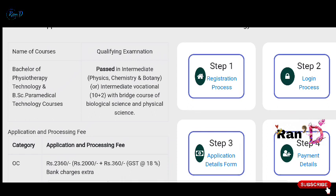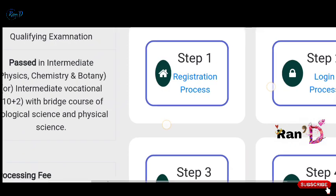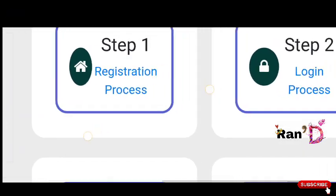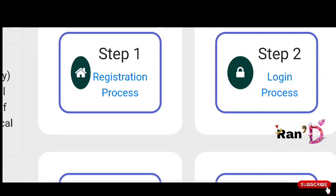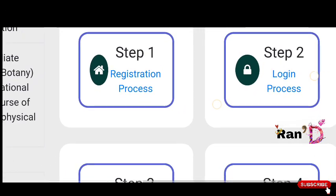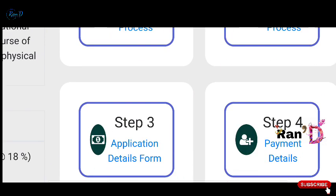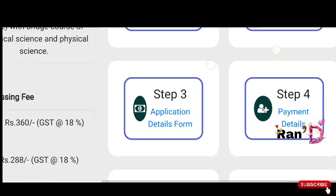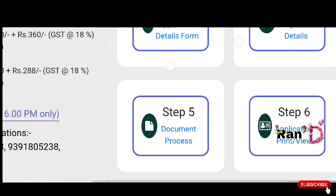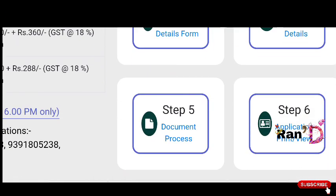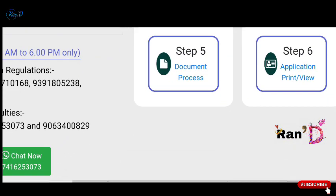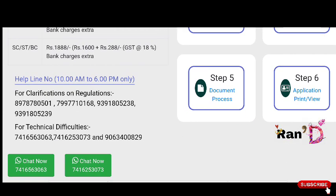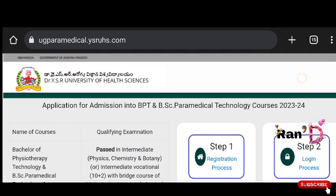So let me show you a clear cut step-by-step process: Step 1 — Registration process. Step 2 — Login process. Step 3 — Application detail form. Step 4 — Payment details. Step 5 — Document process. Step 6 — Application print or view.